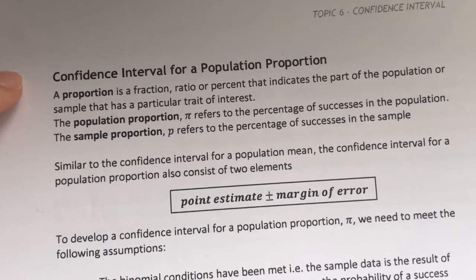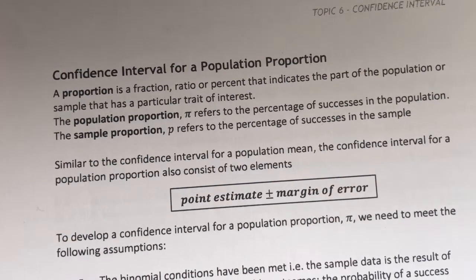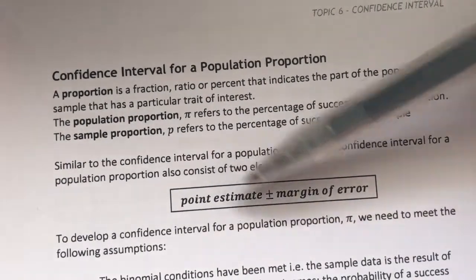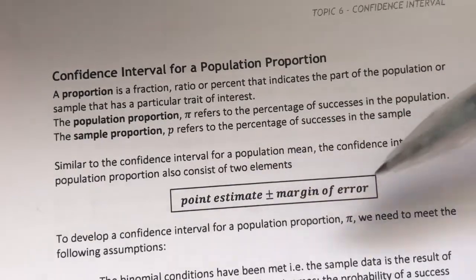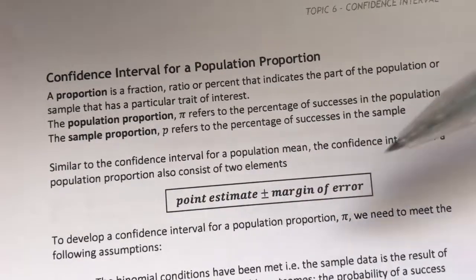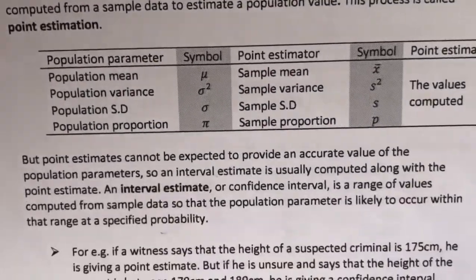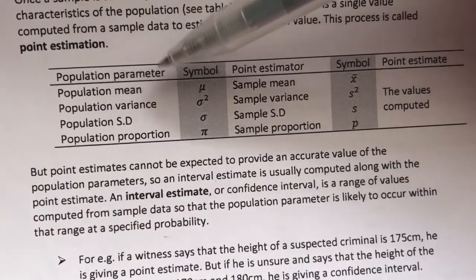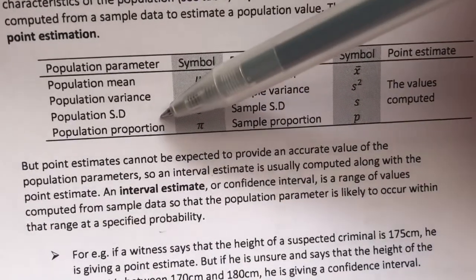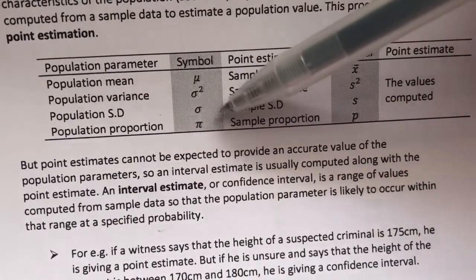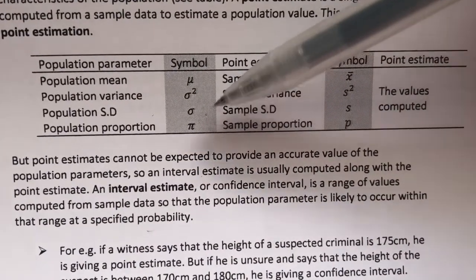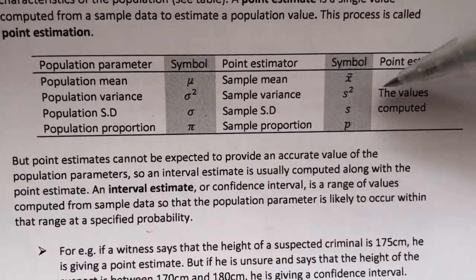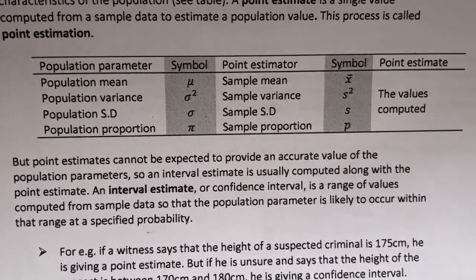Just like before, we will have two parts to the formula, which is the point estimate plus minus our margin of error. If you recall this table, if we're talking about the population proportion, which is pi, the best estimate for pi is p, which is the sample proportion.